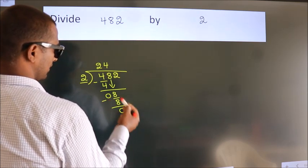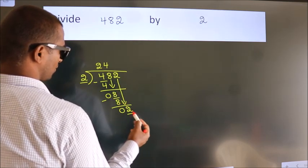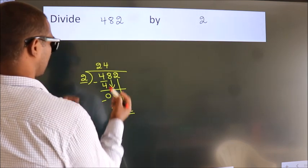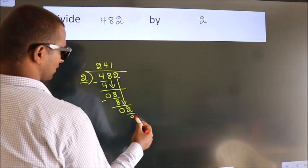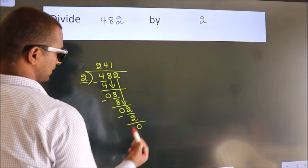After this, bring down the beside number. So, 2 down. When do we get 2? In 2 table. 2 1's, 2. Now, we subtract. We get 0.